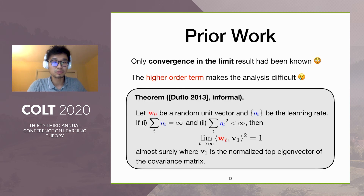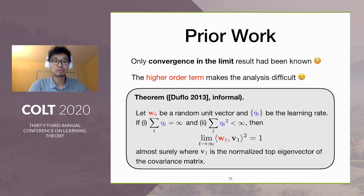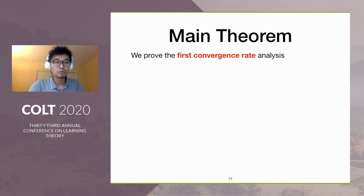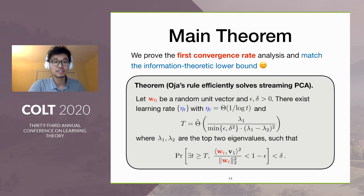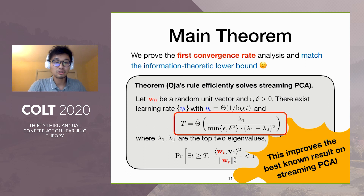Typically, people can only derive results that provide convergence in the limit guarantee. While we know that retina adapts efficiently, convergence rate analysis is of great importance to provide more insight. So in this work, we give the first convergence rate analysis. Specifically, we match the information-theoretic lower bound in the sense that the rate is only off by some logarithmic factors. And as a side product, the result also improves the best known results on streaming PCA.